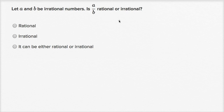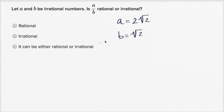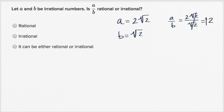Let's imagine a world where A is equal to two times the square root of two and B is equal to the square root of two. In that world, A over B would be two square roots of two over the square root of two, which would be two — which is very much a rational number. I can express that as two over one. So in this case, A over B is rational even though A and B are irrational.